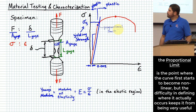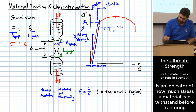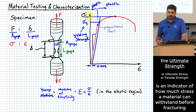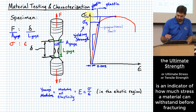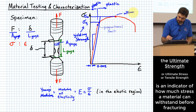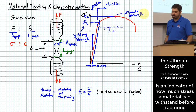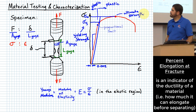The third important feature is what this textbook calls ultimate strength - the peak stress value on the curve. That stress value at the top is the most the material can reach, and it's called ultimate strength.